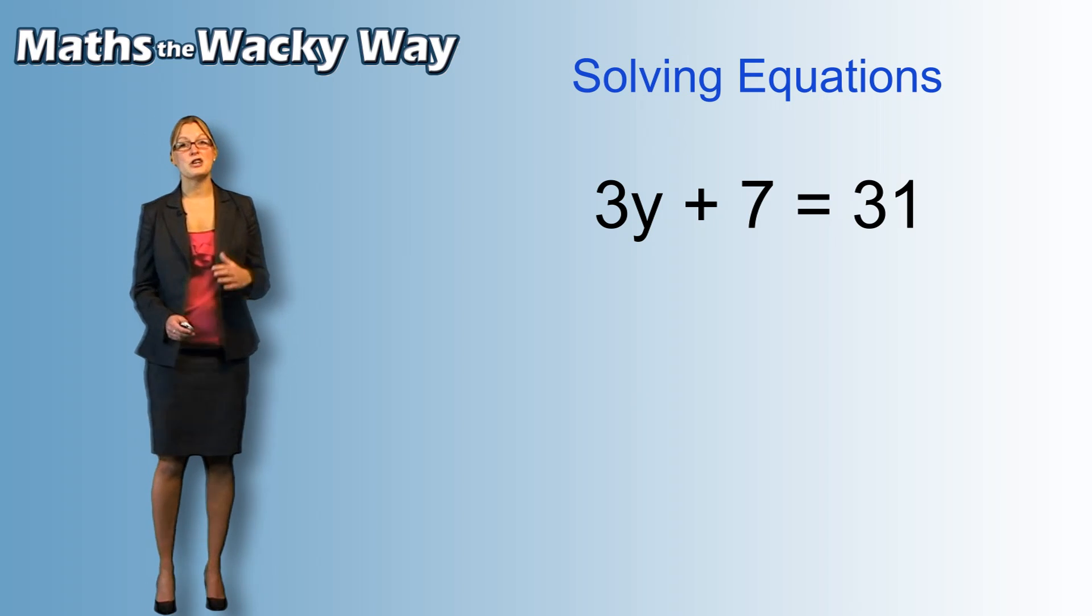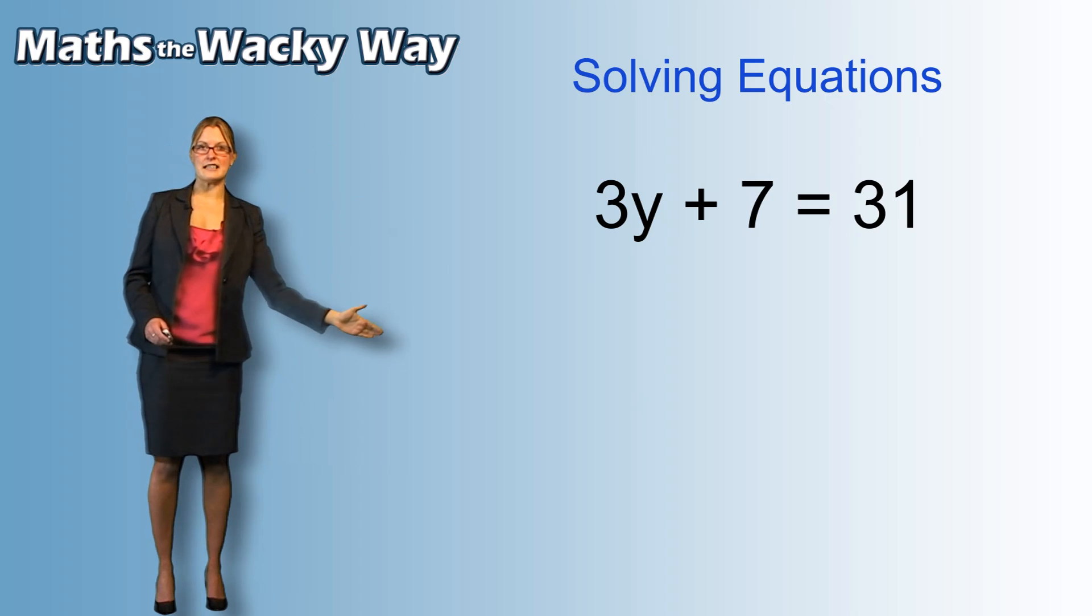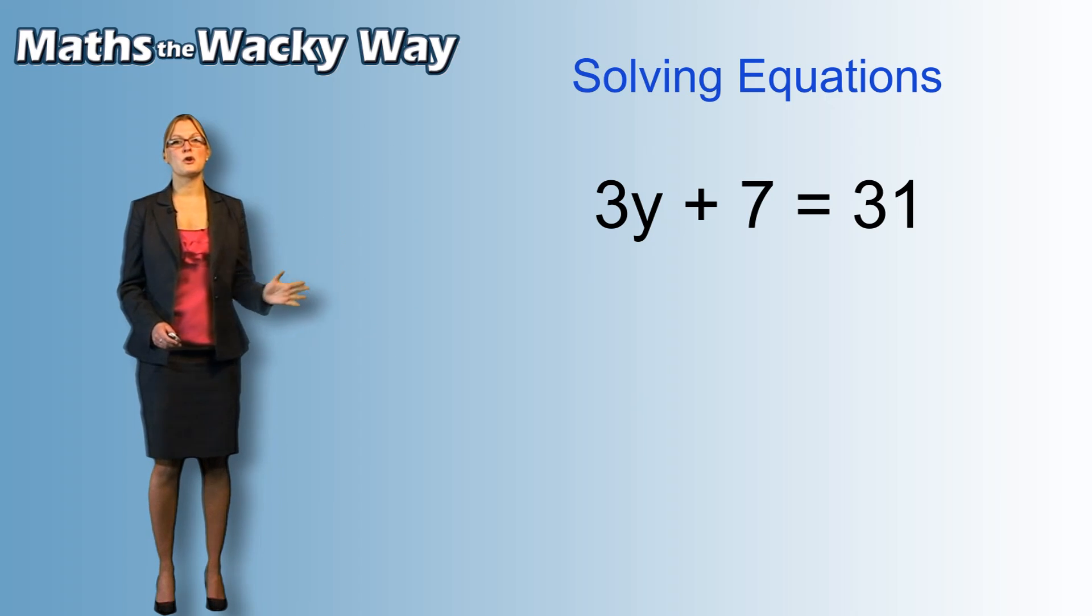Now the only place that we can actually go is to the other side. So 7 is going to go across the equal sign and is going to become on the other side of the equation.